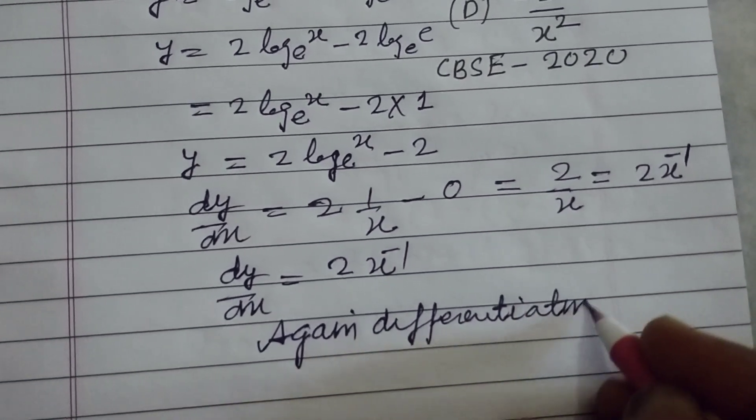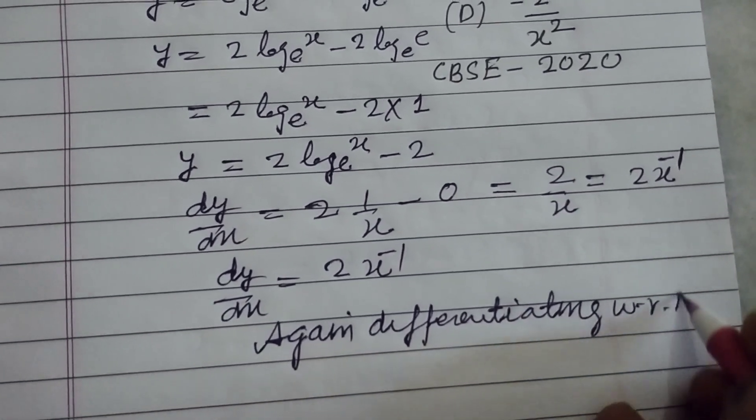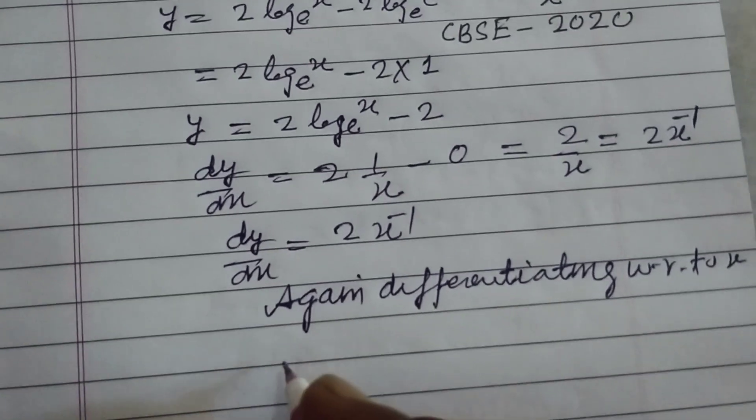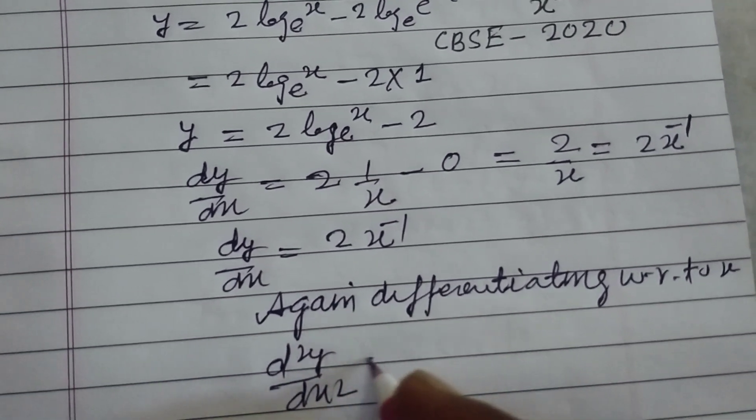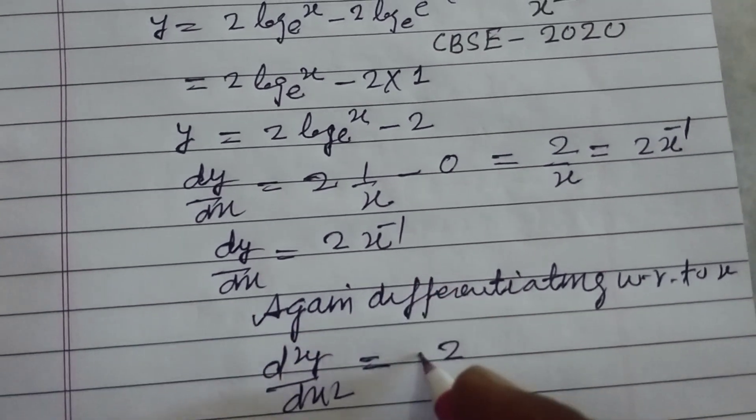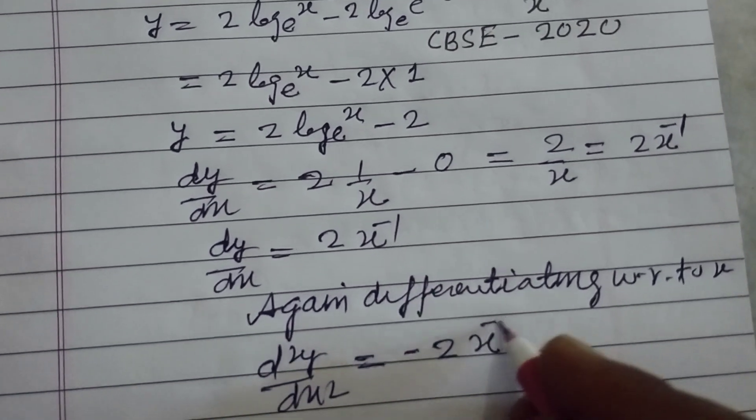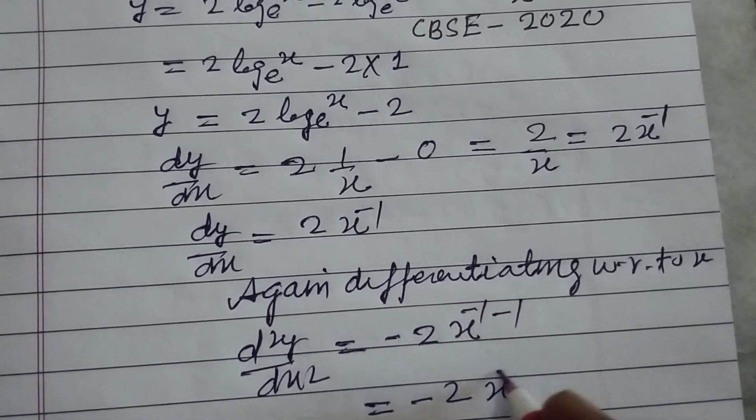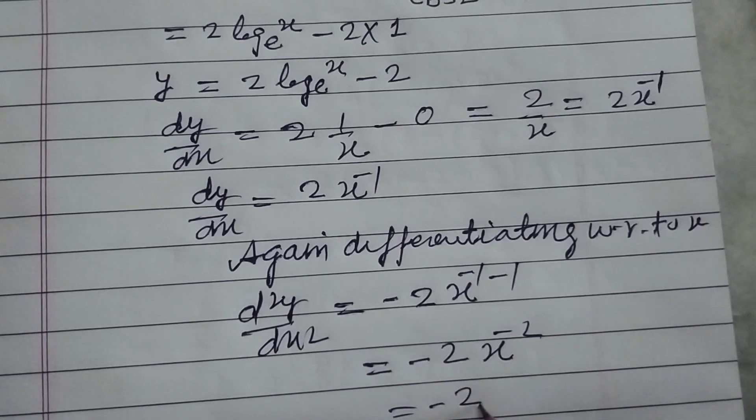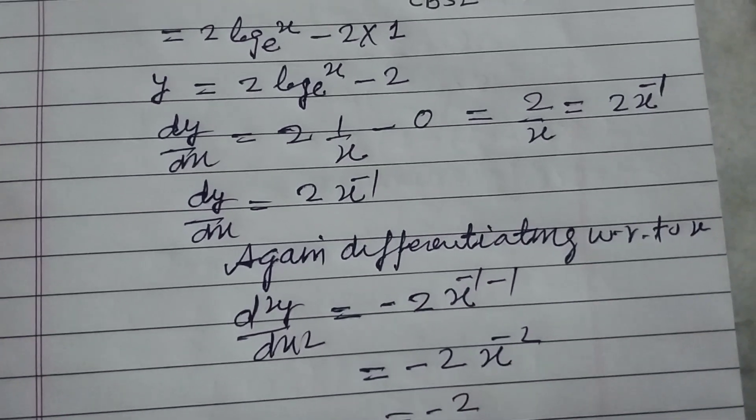Differentiating with respect to x. So this is d squared y over dx squared: 2 times minus 1, x to the power minus 1 minus 1. So minus 2 x to the power minus 2, and this is minus 2 upon x squared.